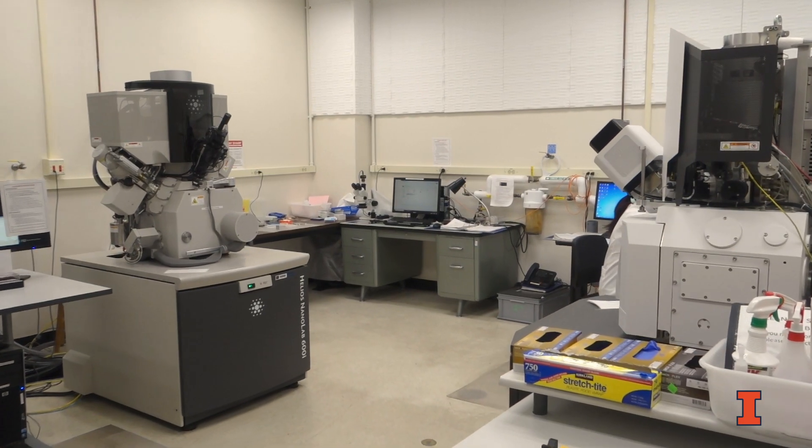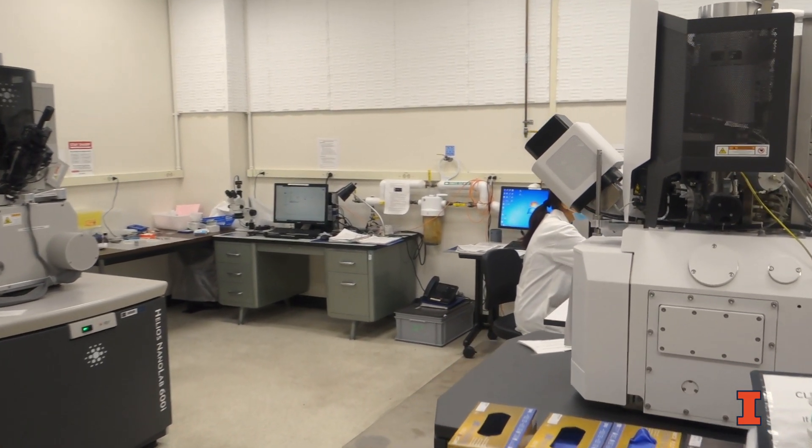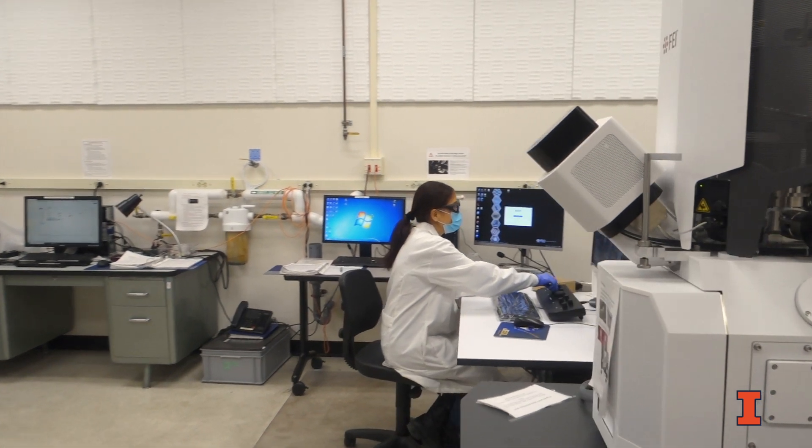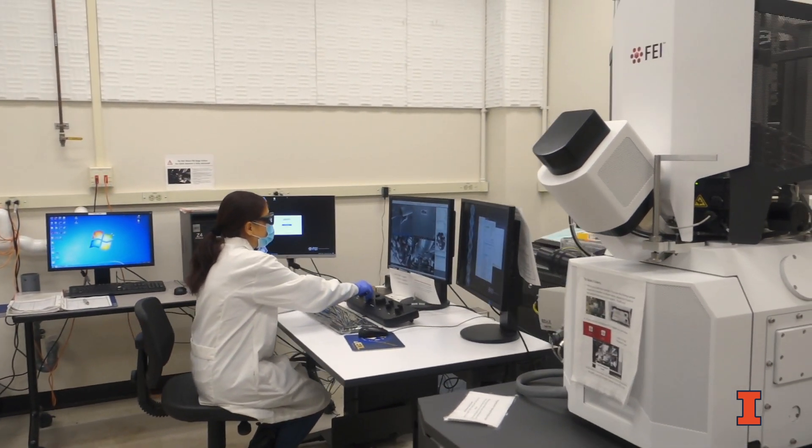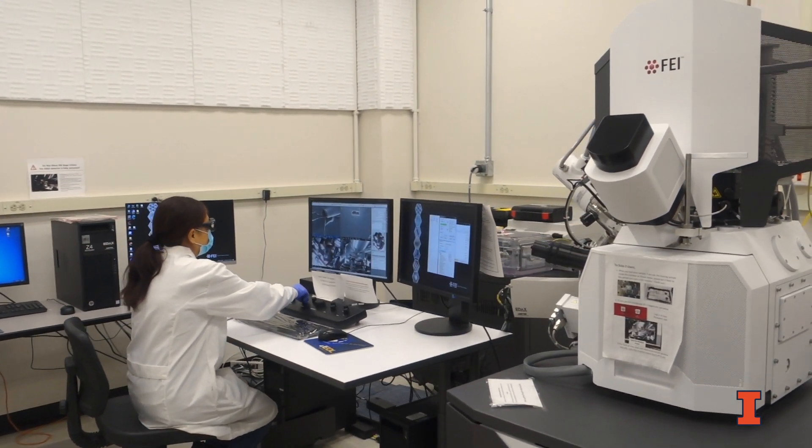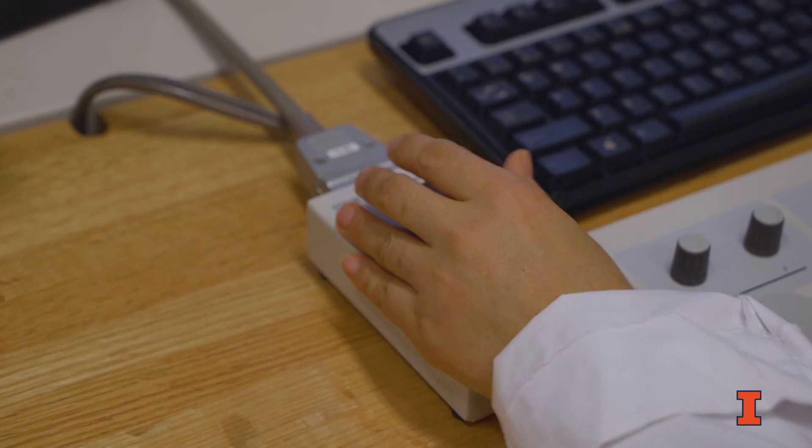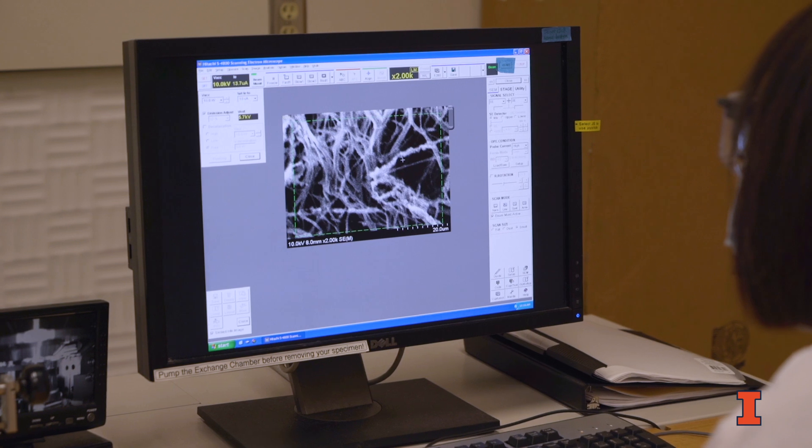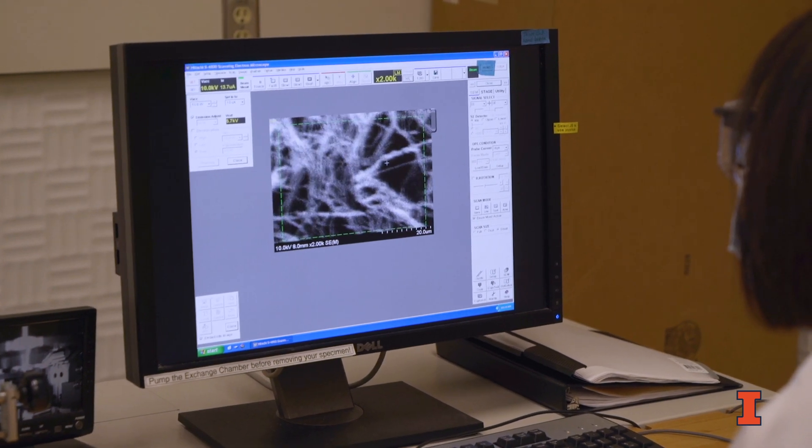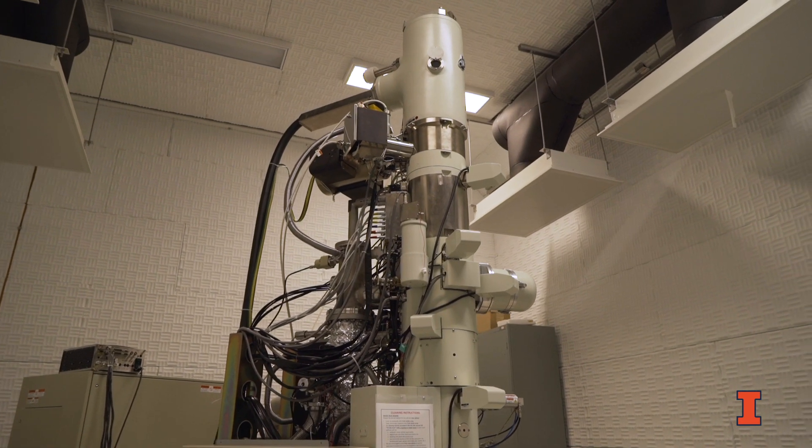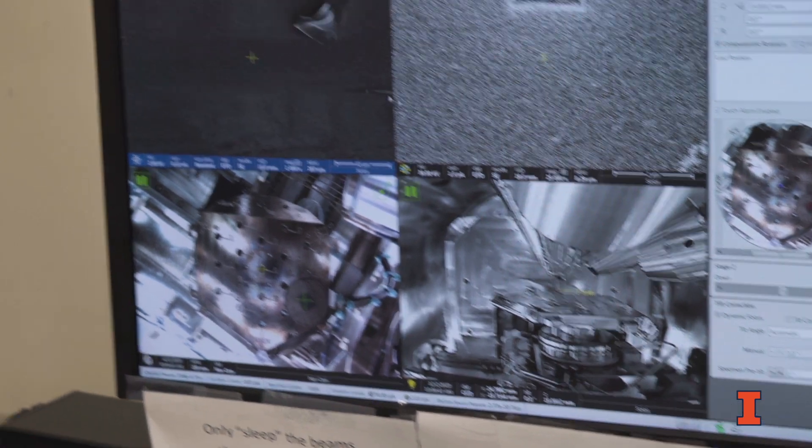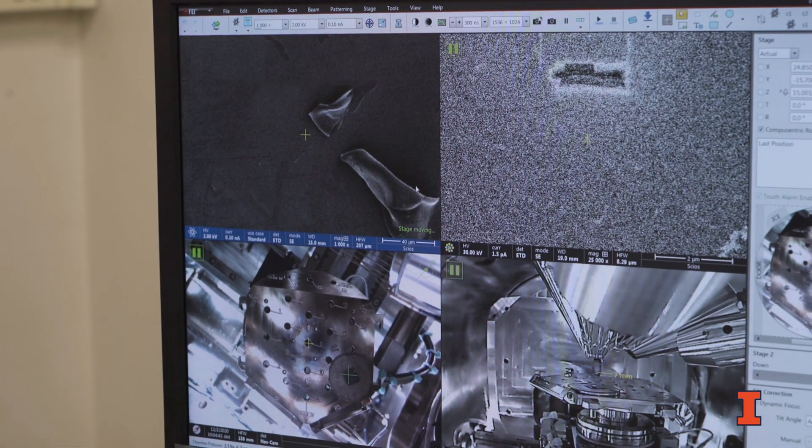Two dual-beam focused ion beam systems, the Scios 2 and Helios 600, are available for 3D materials processing and automated liftoff, in addition to four scanning electron microscopes with EDS, electron backscattering diffraction, and cathode luminescence capabilities. We also offer a multitude of tools for sample preparation, including a PEX-2 ion beam polisher.